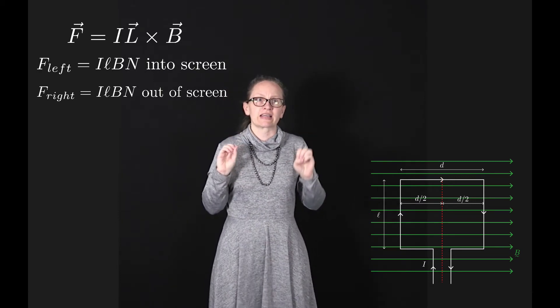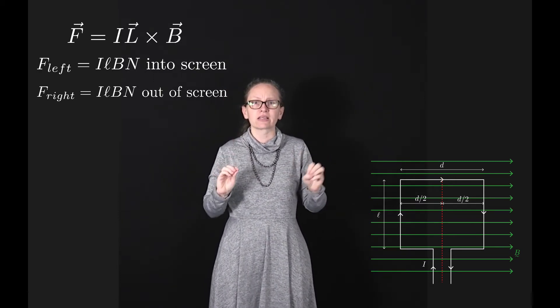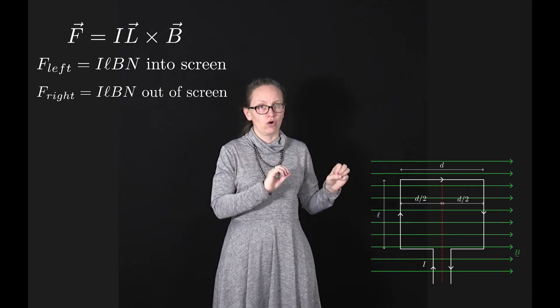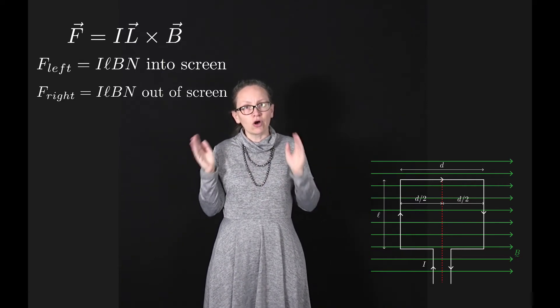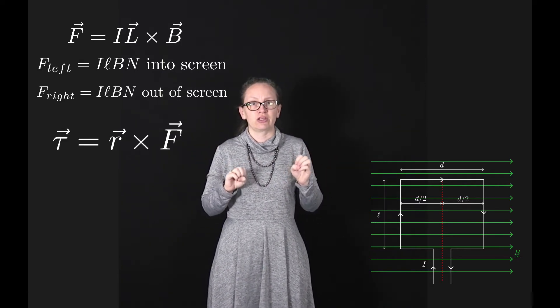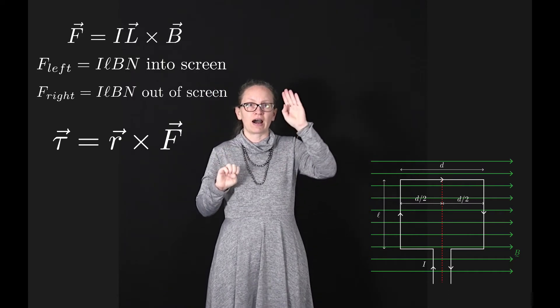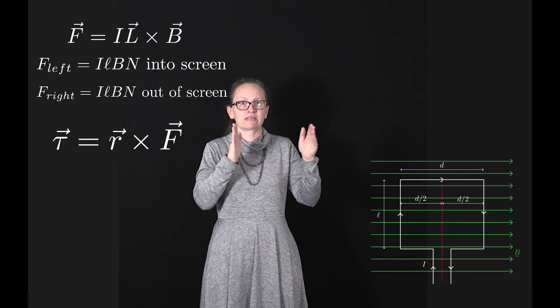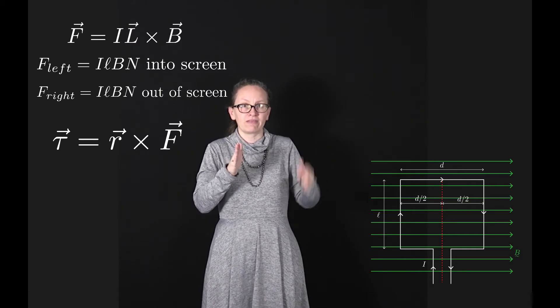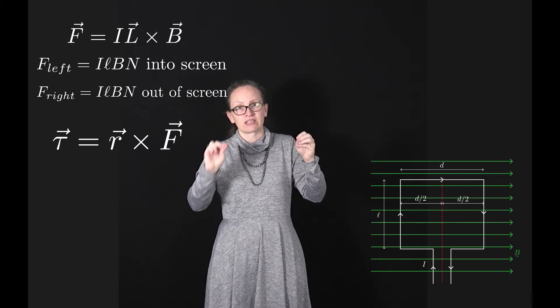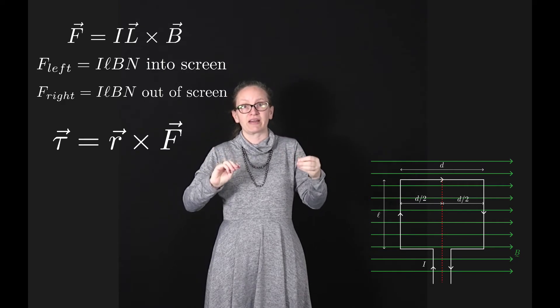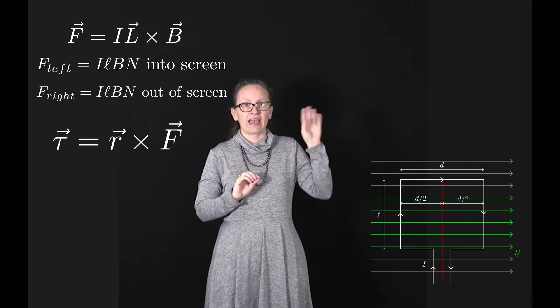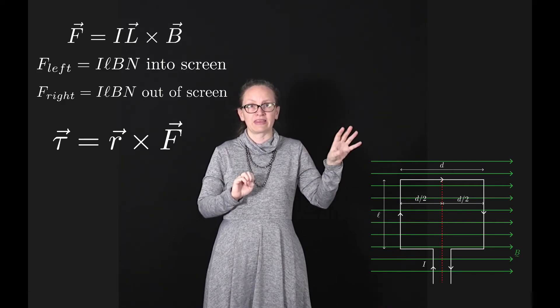However, these forces are acting at different points, so we do have a net torque. Remember that torque is described with the equation torque equals R cross F, where R is the displacement from the pivot point to where the force is applied, and F is the force that is applied there.